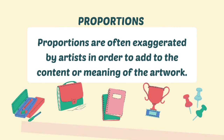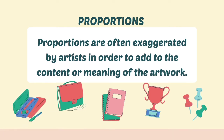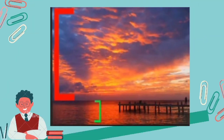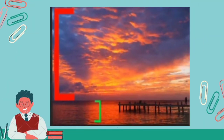Proportions are often exaggerated by artists in order to add to the content or meaning of the artwork. Proportion is a valuable tool to change the way something looks. Look at this example — the sky is dramatically larger than the water to emphasize the sunset.